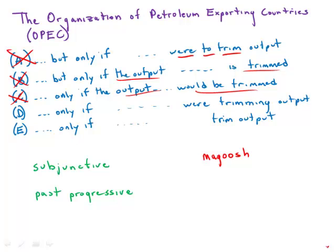Answer choice D gives us 'were trimming,' which is the past progressive. The past progressive denotes an action that was in progress in the past — for example, 'he was running yesterday when something else happened,' emphasizing the action in process. Here, though, they don't have to be in the actual act of reducing output at the time OPEC cuts production. As long as one action is done and the other is done, that's fine. Whether the action is in process is irrelevant, so the past progressive is simply not correct.